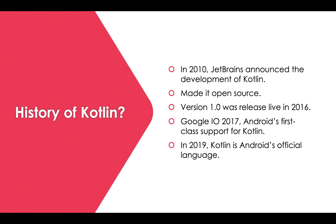Version 1.0 was released in 2016, so that was the first version of Kotlin to launch. At Google I/O 2017, Android announced first-class support for Kotlin, and in 2019 Kotlin became Android's official language. So for Android, you can develop any application in Kotlin.